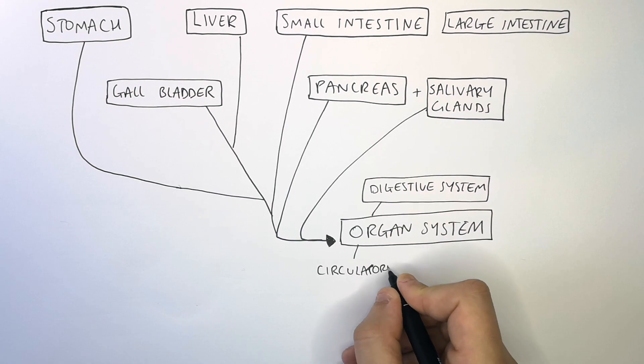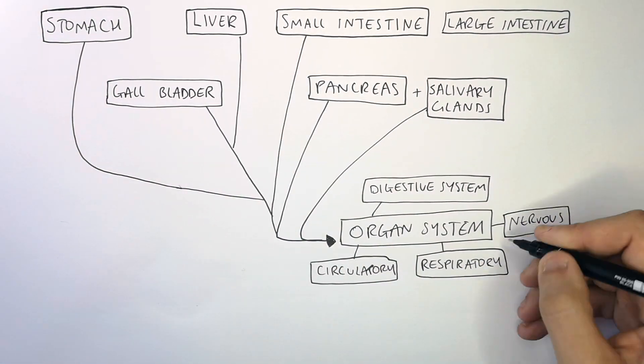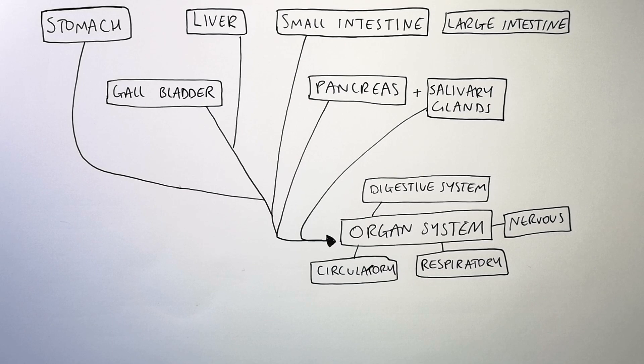Other organ systems include the circulatory system, the respiratory system and the nervous system, all of which are explained in other videos at kscience.com.